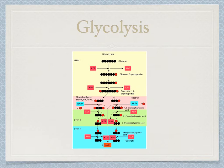Glycolysis is the first step of cellular respiration. Glycolysis is the process where glucose is split into two 3-carbon molecules called pyruvate. To split them, two phosphates from two molecules of ATP are added onto the glucose. This is called phosphorylation. This unstable molecule is then split into two molecules, each still having one phosphate attached to them.